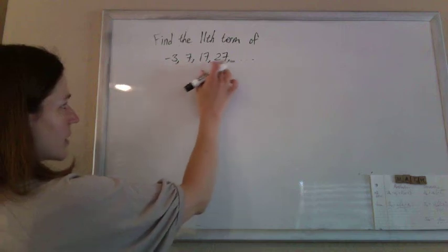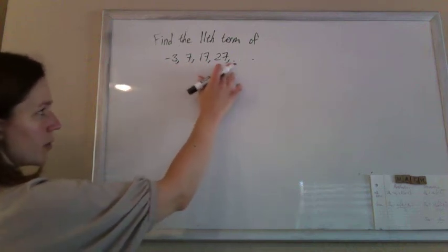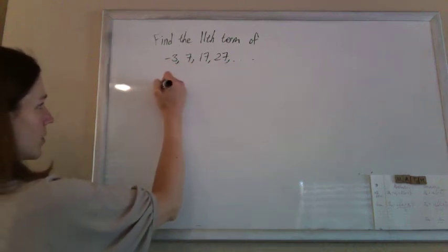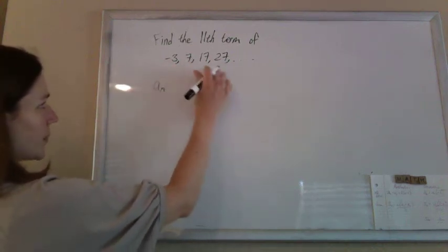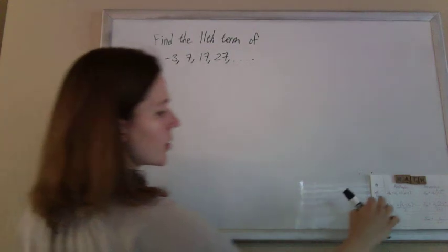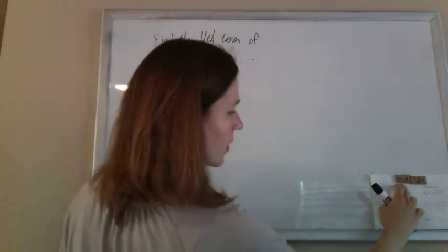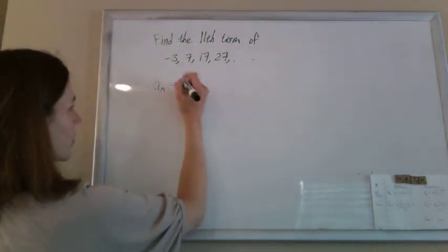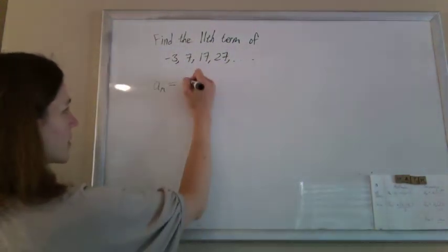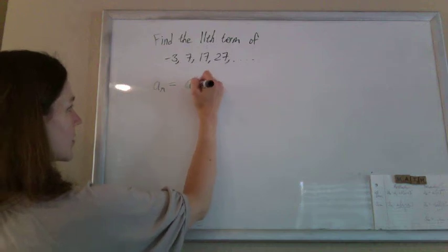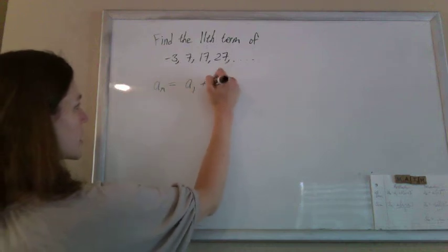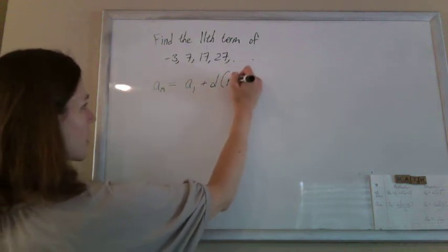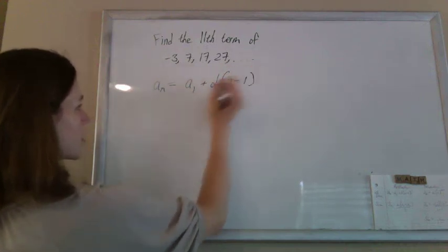If you're adding the same thing every time, you're using an arithmetic sequence. And so it's an arithmetic sequence. We want to find the nth term, so we're pulling out the formula: a sub n equals the first term plus the common difference times n minus 1.